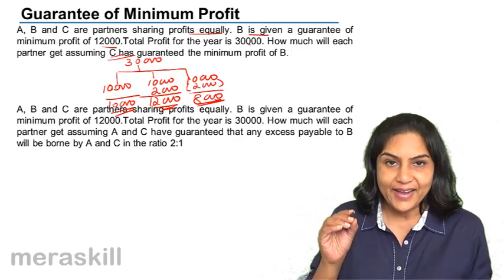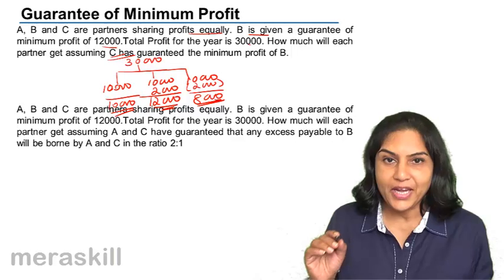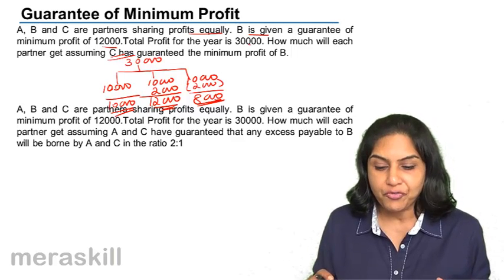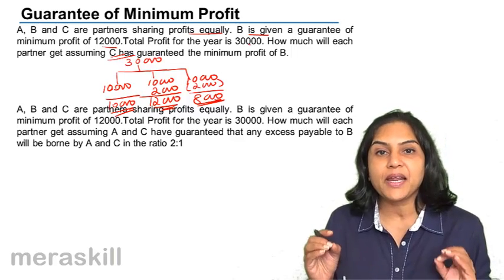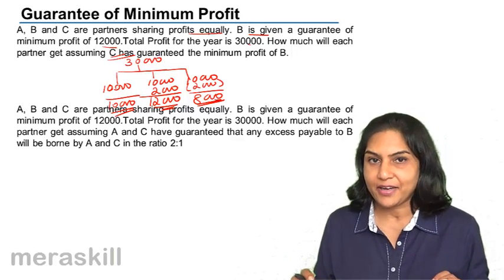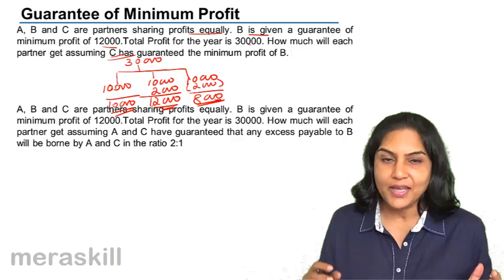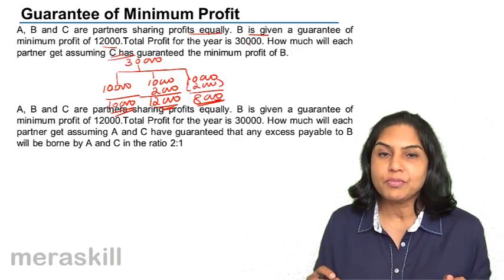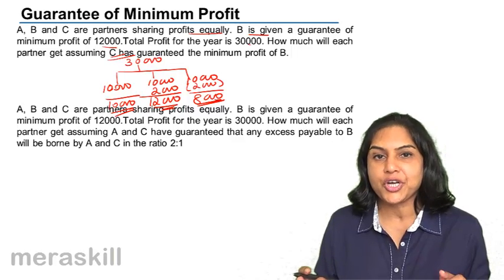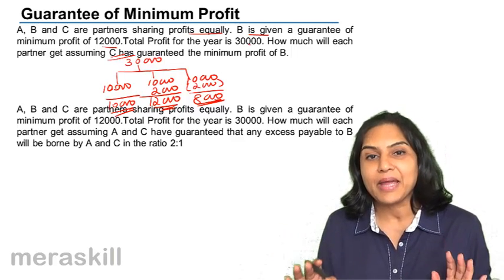So when there is a guarantee of minimum profit to any of the partners, the shortfall is made by the remaining partners as per agreement. Again, if nothing is mentioned about the agreement, we assume that it is in the profit sharing ratio between the remaining partners.